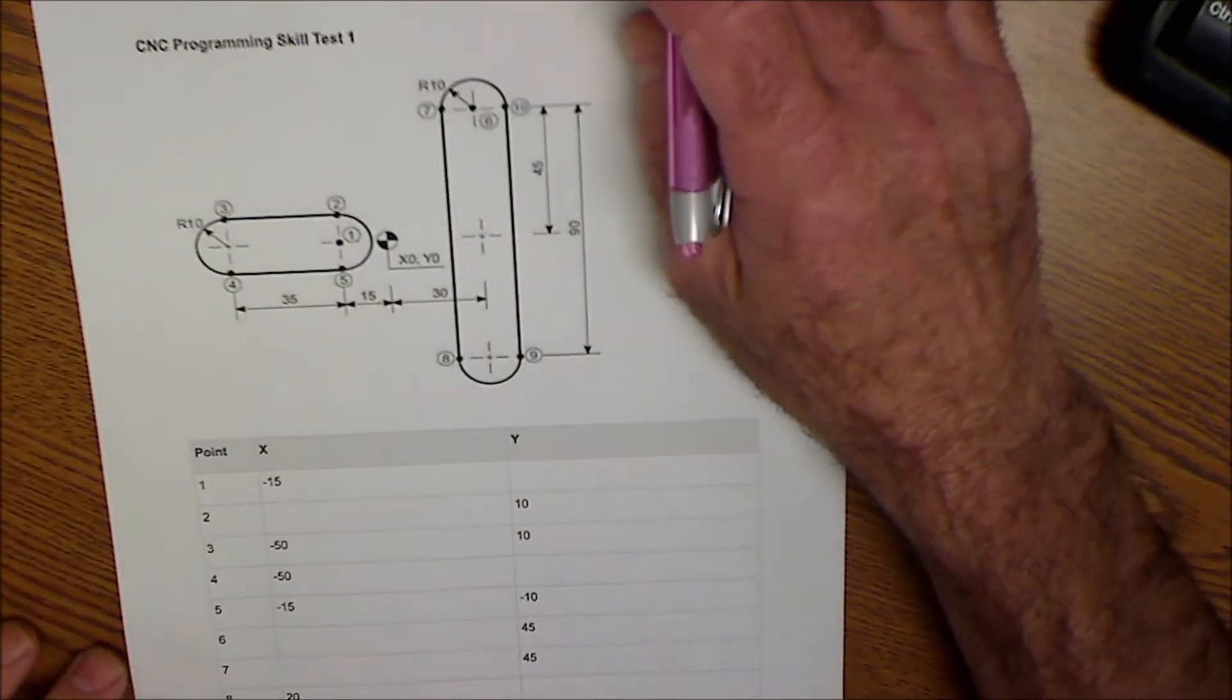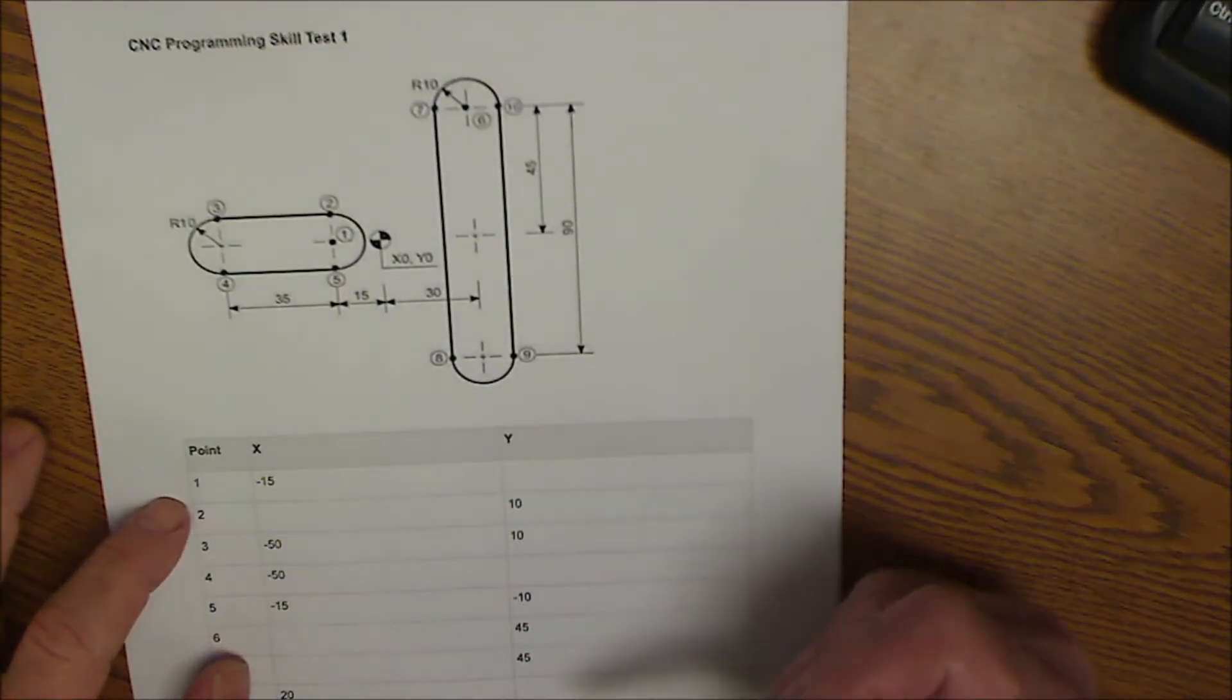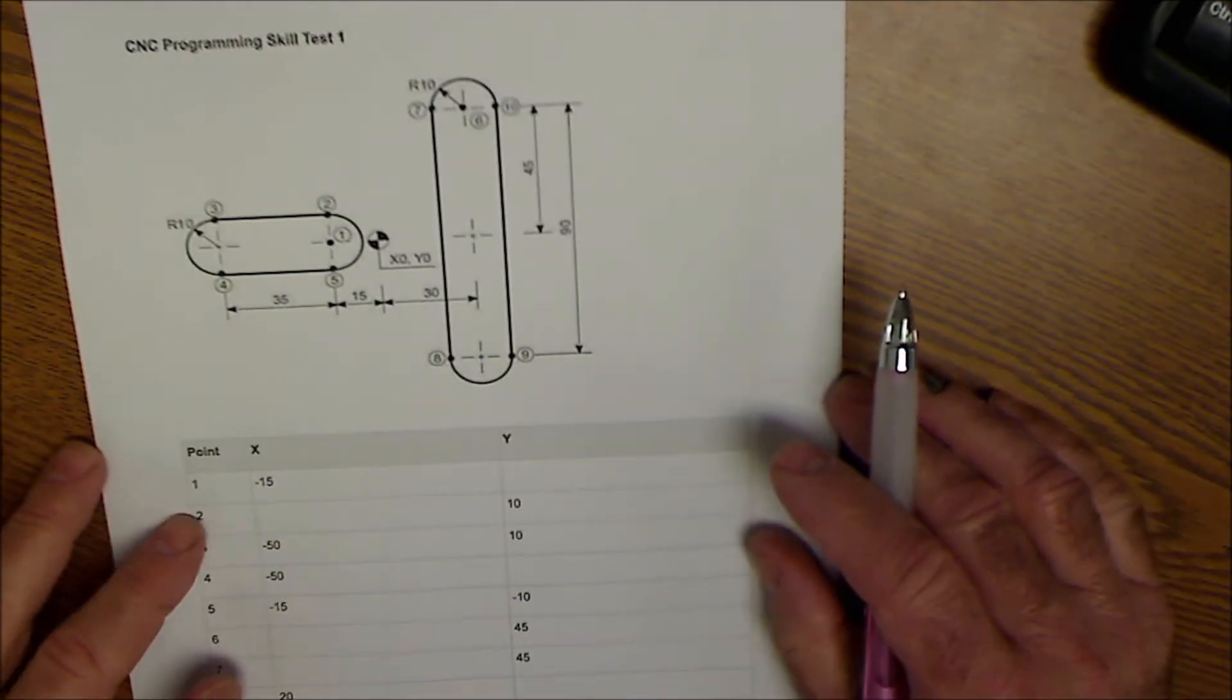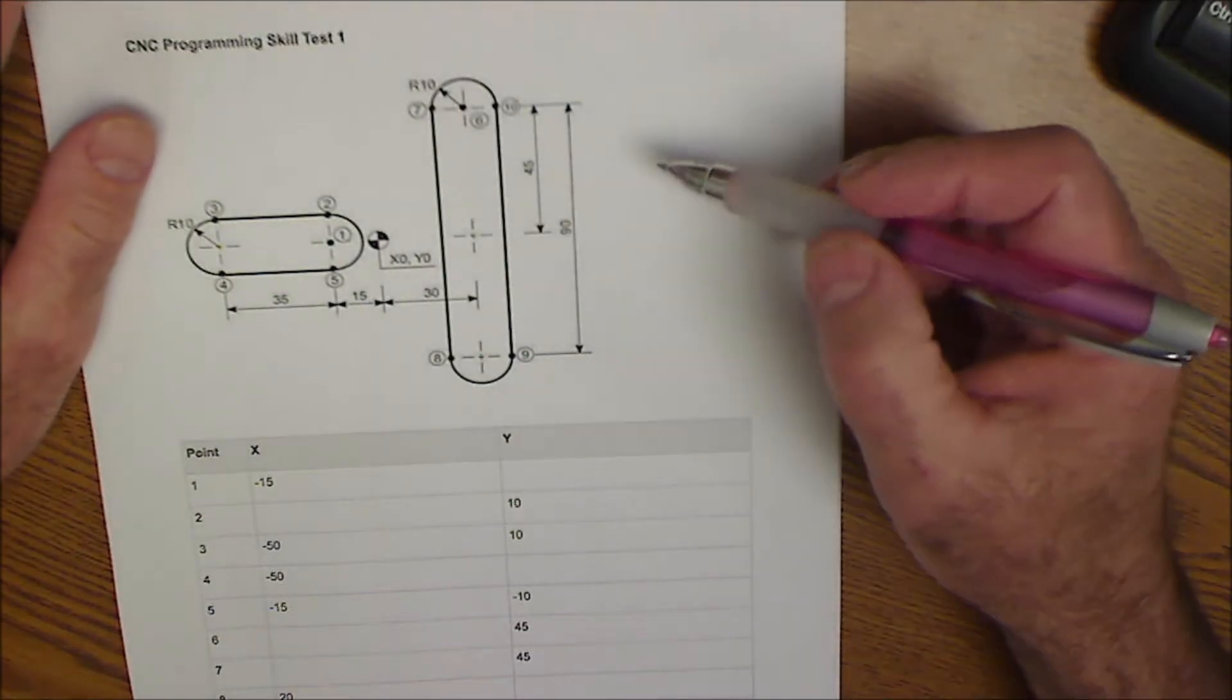Okay, here's the test right here. This is a simple diagram and what you're doing is filling in the coordinates for all these different points. Where I get started first is just trying to figure out where the diagram is positioned.